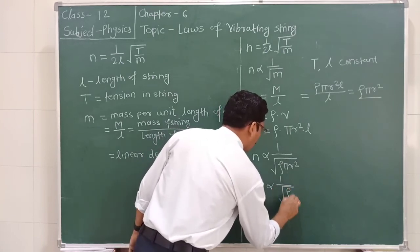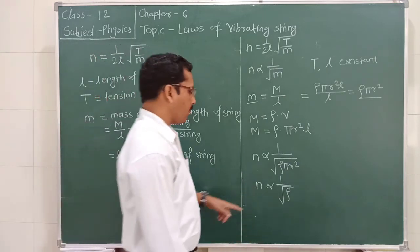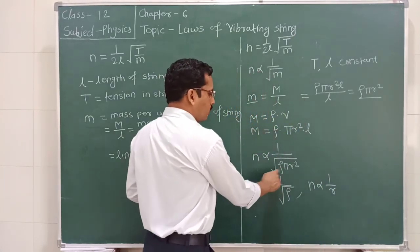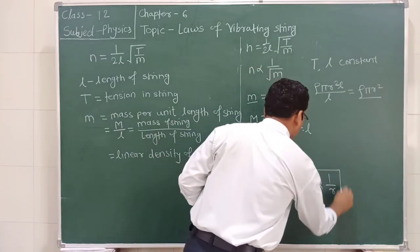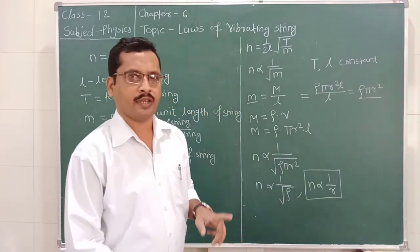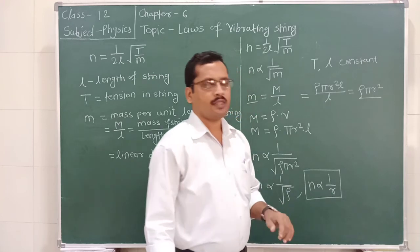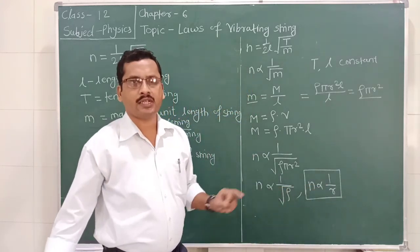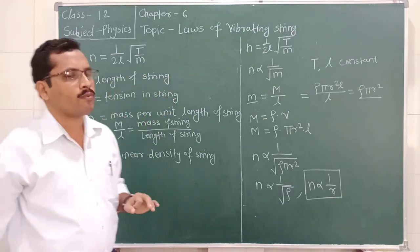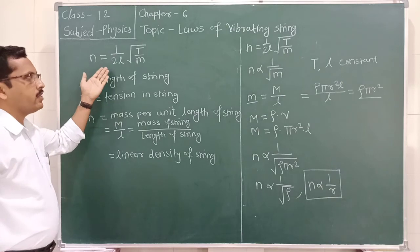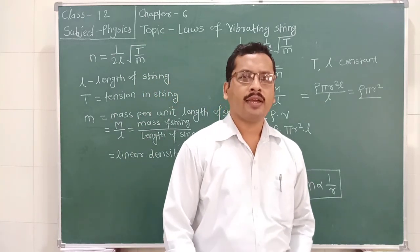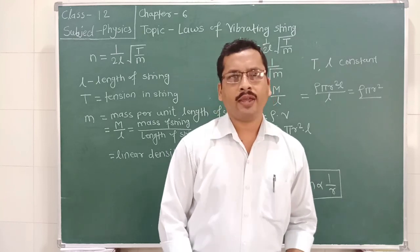So n is inversely proportional to the square root of the density of the string, and also n is inversely proportional to r, because the square root of r squared equals r. This means the fundamental frequency depends on the radius of the string and the density of the string. Today we discussed the three laws of vibrating string: law of length, law of tension, and law of linear density.